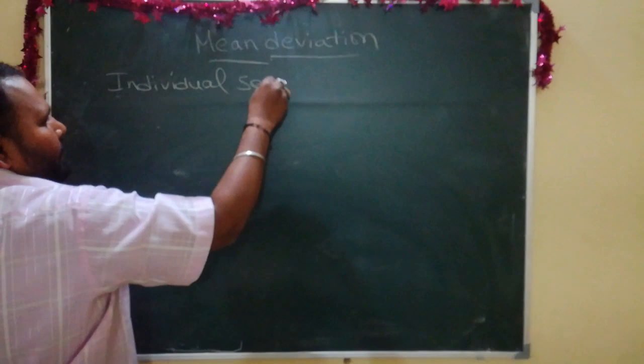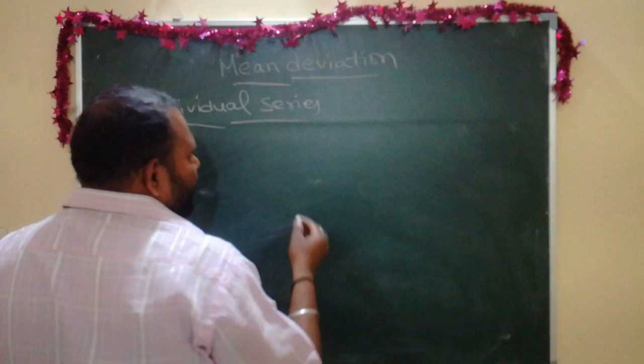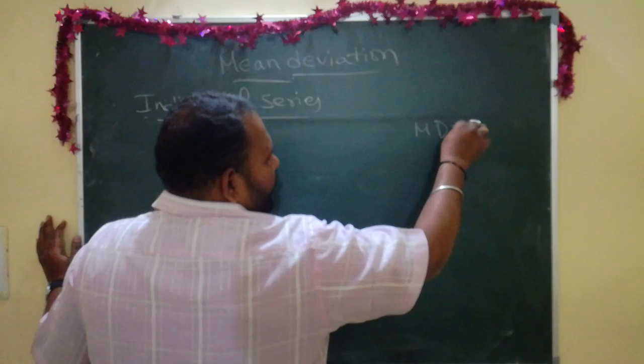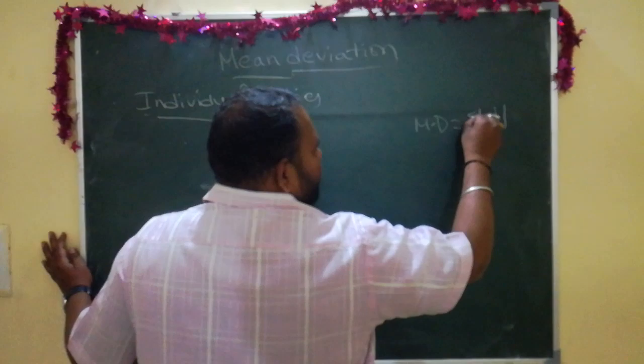The formula of calculation of mean deviation is very simple, that is: mean deviation is equal to sigma modulus d, divided by n.